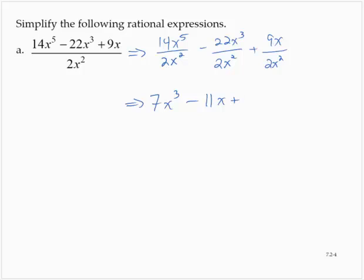And then plus, now here, if we focus on the x's first, I'd have x over x squared. That's going to leave an x in the denominator. And the 9 and the 2 don't reduce, so I'd have 9 over 2x.